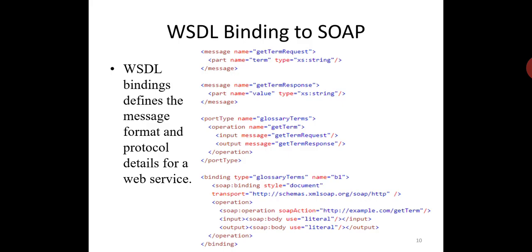WSDL binding to SOAP: WSDL binding defines the message format and protocol details for a web service. The binding element has two attributes — name and type. The name attribute defines the name of the binding and the type attribute points to the port for the binding, in this case the glossary terms port. The SOAP binding element has two attributes — style and transport. The style attribute can be RPC (remote procedure call) or document; in this case we use document. The transport attribute defines the SOAP protocol to use; in this case we use HTTP. The operation element defines each operation that the port type exposes. For each operation, the corresponding SOAP action has been defined. You must also specify how the input and output are encoded; in this case we use literal.